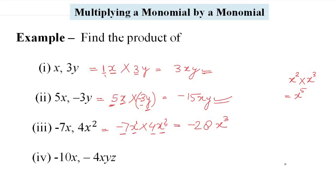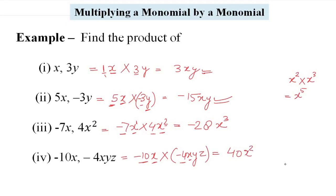Next part: −10x और −4xyz. That is equal to −10x multiply by (−4xyz). −10 × −4 = 40 (minus × minus = plus). फिर x × x = x², और yz के साथ multiply में कुछ नहीं है, so answer है 40x²yz.